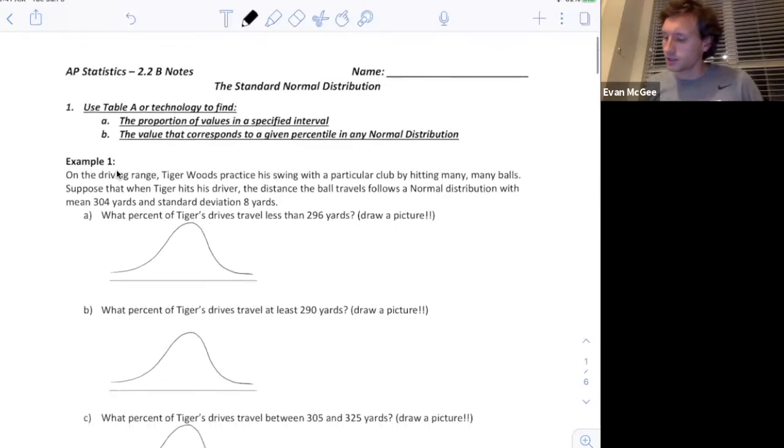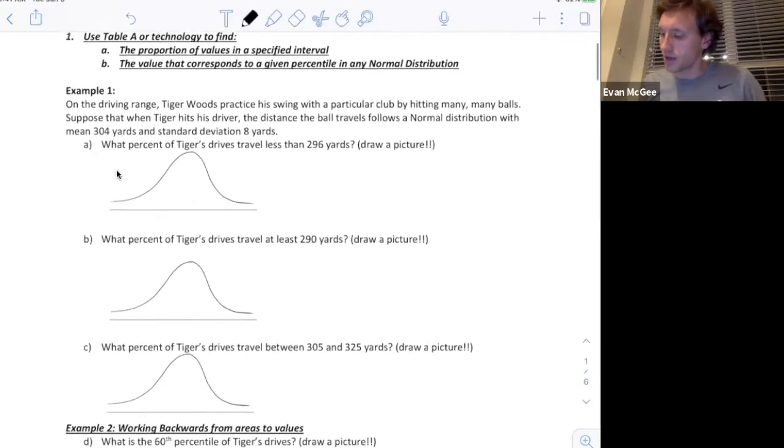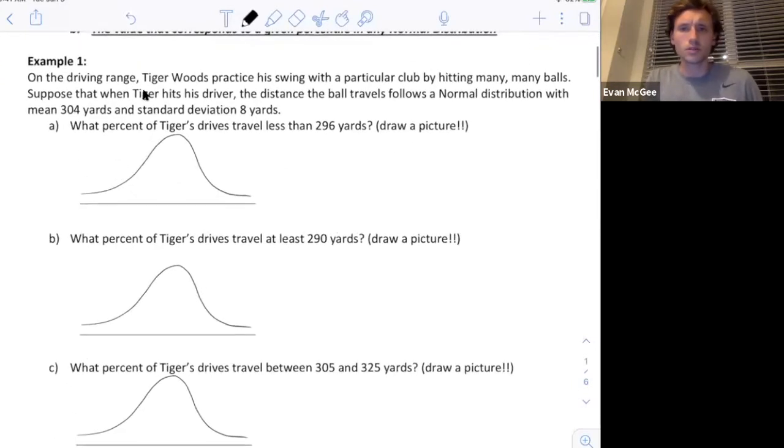Let's look at an example of Tiger Woods on the driving range. Suppose when he hits with his driver, the distance that the ball travels follows a normal distribution with a mean of 304 yards and a standard deviation of 8 yards. What percent of Tiger's drives travel less than 296 yards? First let's sketch our distribution. We know that it's normal with a mean of 304 and standard deviation of 8.